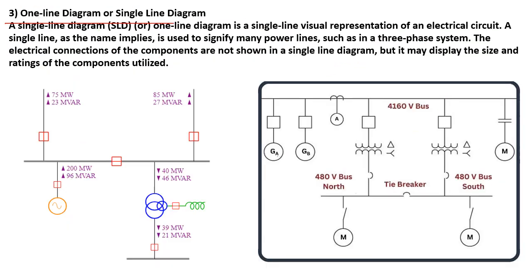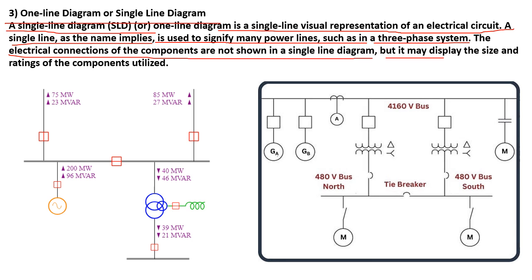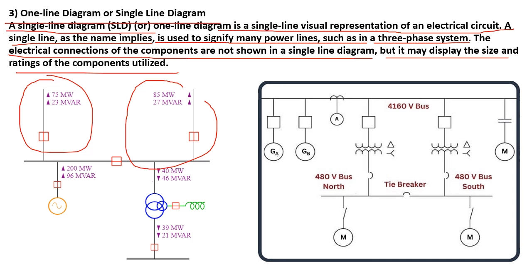The third one is the one line diagram or single line diagram. A single line diagram is a visual representation of an electrical circuit. As the name implies, a single line is used to signify many power lines such as a three-phase system. The electrical connections of the components are not shown in detail, but it may display the size and ratings of the components utilized. Various symbols and lines are used in the one line or single line diagram.